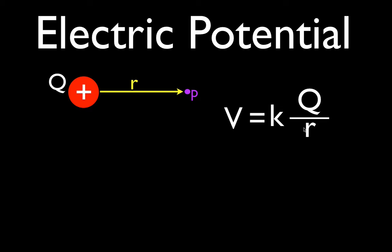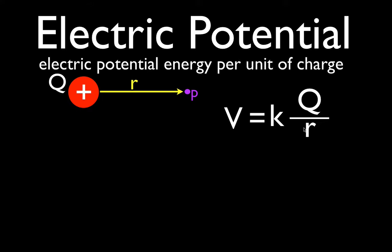When we use this equation to calculate the potential, what you're calculating is the amount of electric potential energy that each unit of charge would have at this point. That's the definition of electric potential: electric potential energy per unit of charge. That's what you calculate — how much energy will each unit of charge at this point, which is this distance away from this main charge, have.